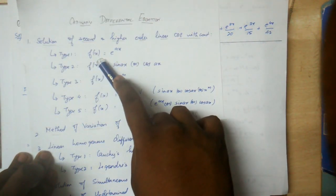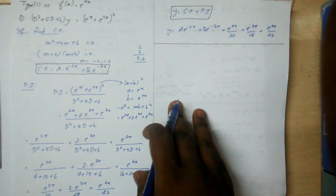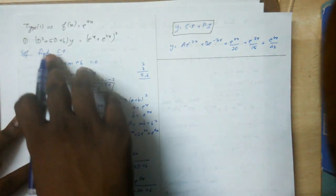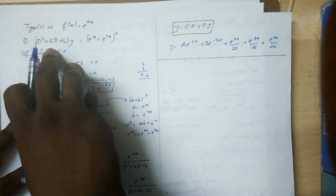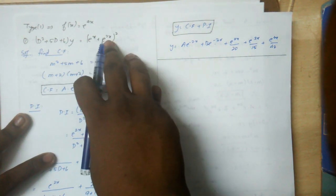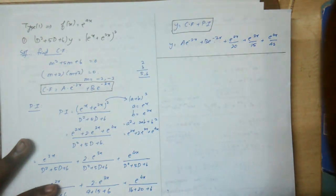So Type 1: f(x) is equal to e^(ax). For this function, we have the differential equation (D² + 5D + 6)y = e^x + e^(2x). This can be written as (a + b)² format.